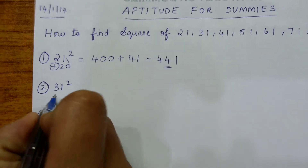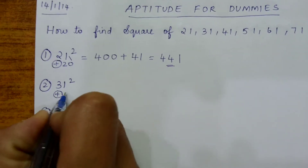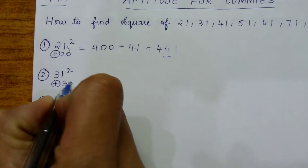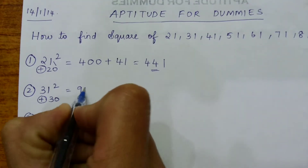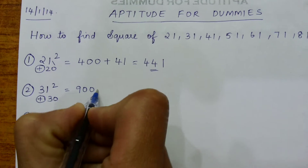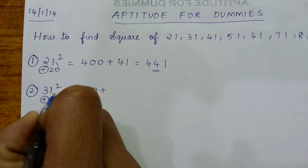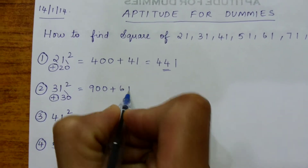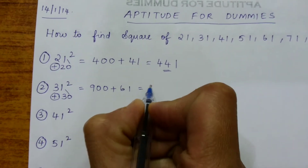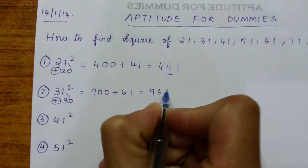Now 31 — it is one more than the perfect square 30. 30 square, we all know, is 900, plus 30 plus 31, that is 61, which gives 961.